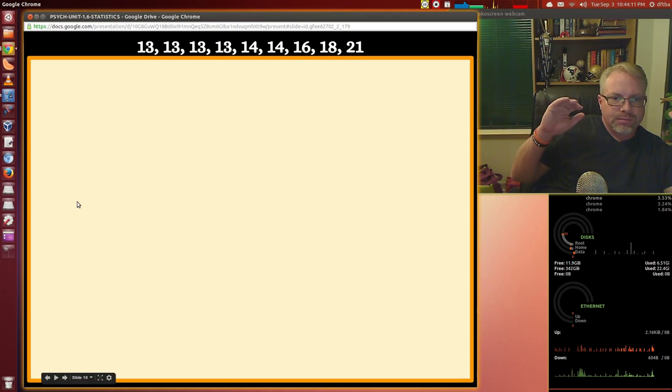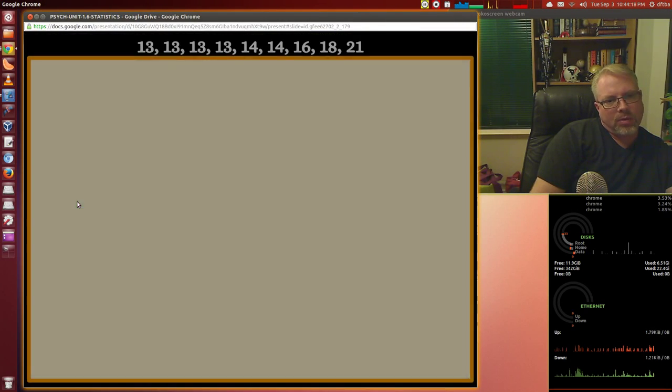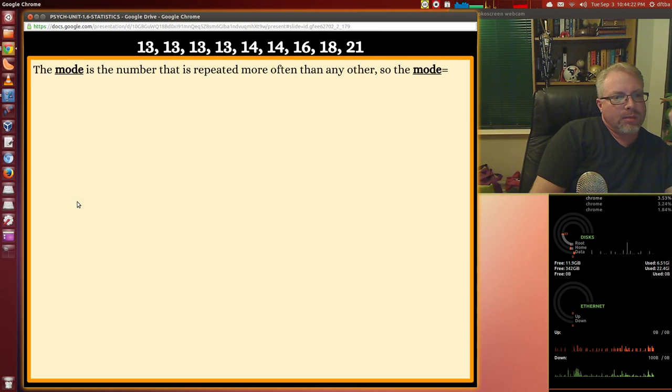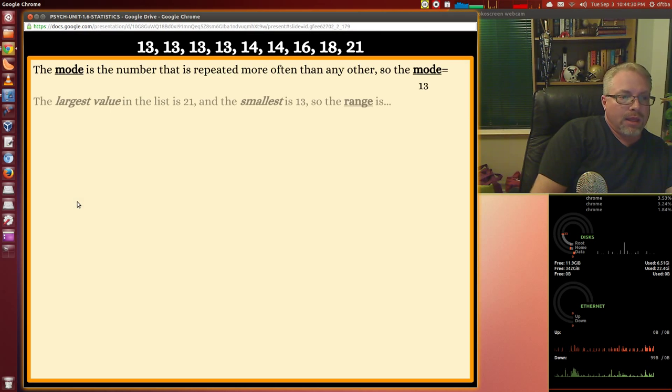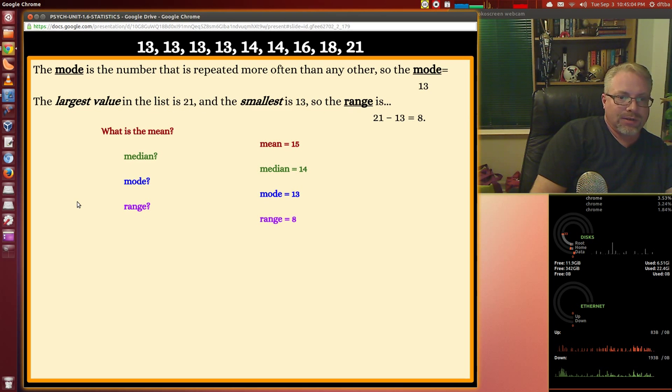Let's look at these numbers. Thirteen, thirteen, thirteen, fourteen, fourteen, sixteen, eighteen, twenty-one. The mode is the number that's repeated more often than any other. So what is the mode? Thirteen. Makes sense, doesn't it? The largest value is twenty-one. The smallest is thirteen. So what is the range? Twenty-one minus thirteen. The range is eight. What's the mean? The mean's fifteen. What's the median? The median is fourteen. It's right in the middle. What's the mode? The mode is thirteen. It's the most often occurring number. And what is the range? The range is eight. The difference between thirteen and twenty-one.